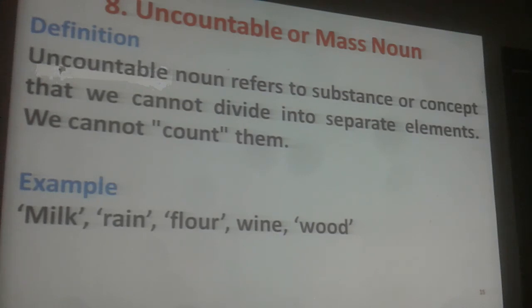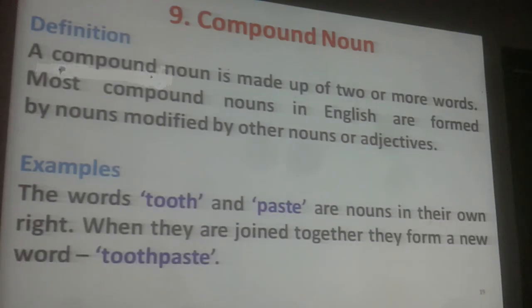Uncountable Nouns refer to substances or concepts that we cannot divide into separate elements and we cannot count them. For example: milk, rain, flour, wine, wood.